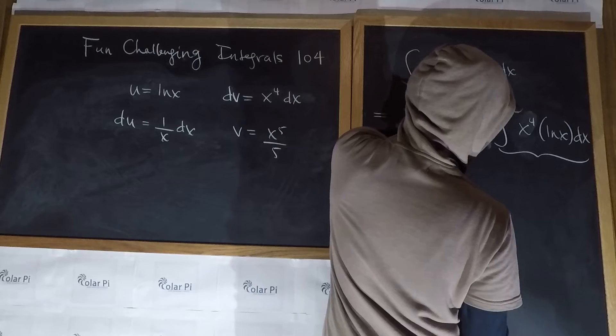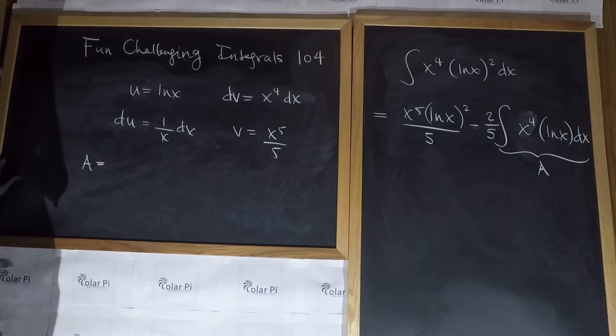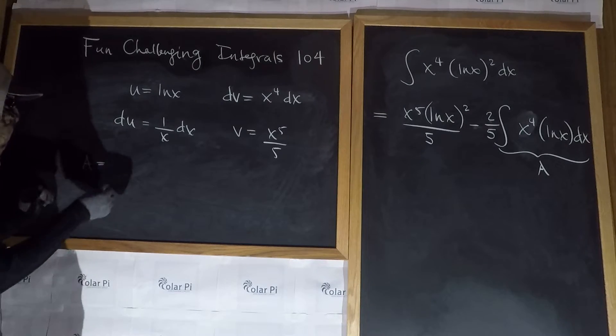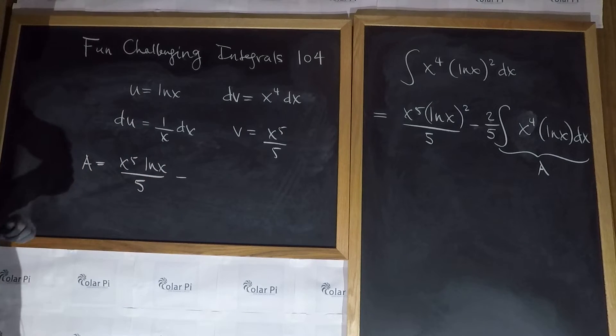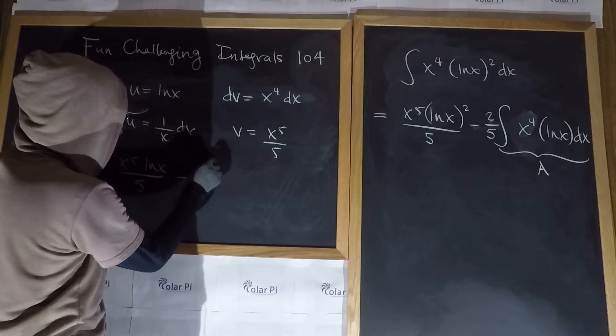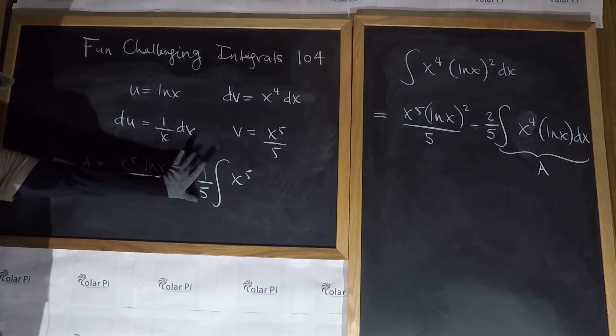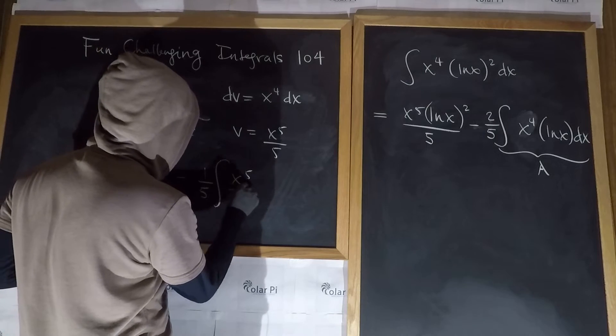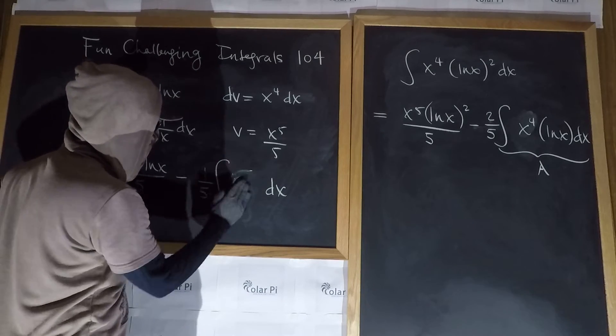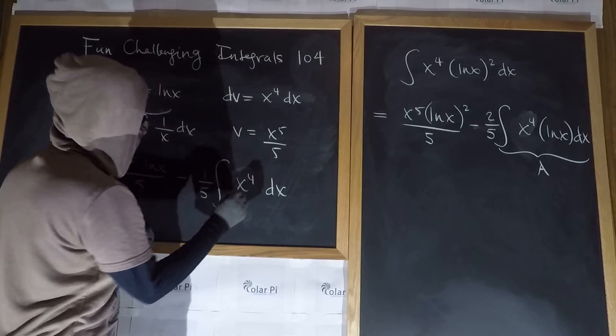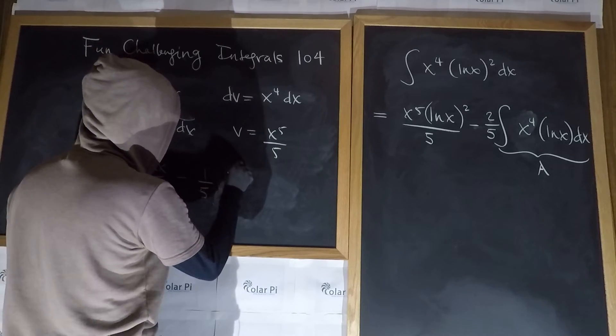So this integral here, without the 2 over 5, just the integral part, if we call that a, and we see that a, which is of the form integral u dv, is equal to uv, which is x to the fifth ln of x over 5, minus integral v du. So minus integral 1 over 5 from v, and then x to the fifth, that's all of v, and then du, so times 1 over x dx. And then x to the fifth over x is x to the fourth, and the integral of x to the fourth dx is x to the fifth over 5.